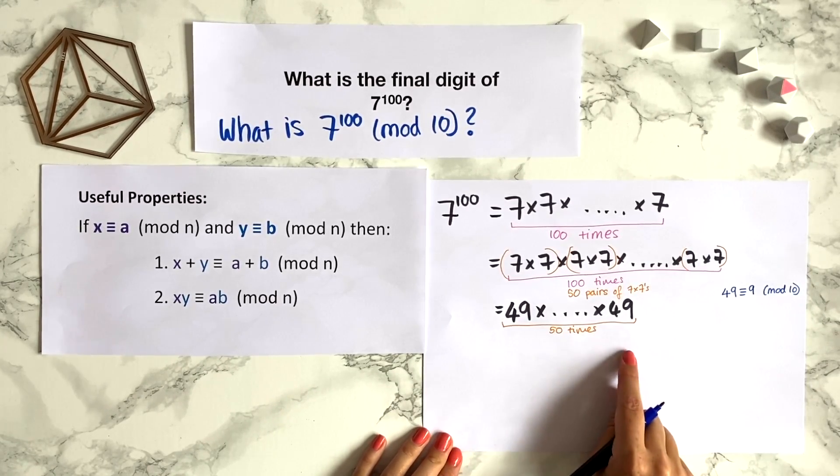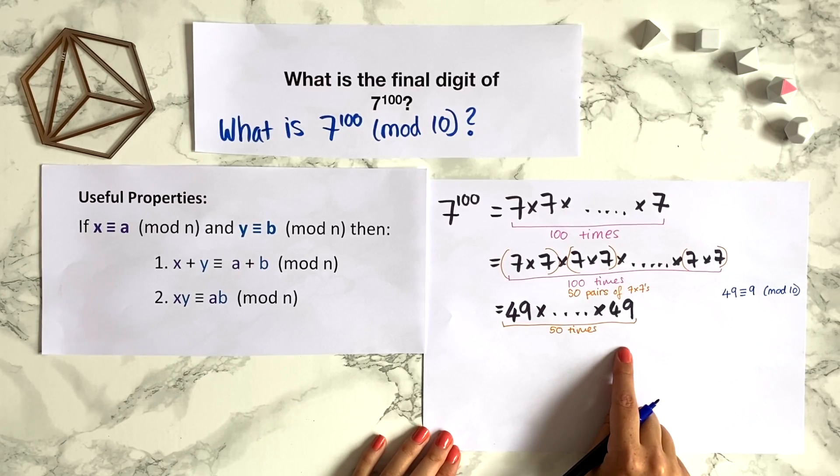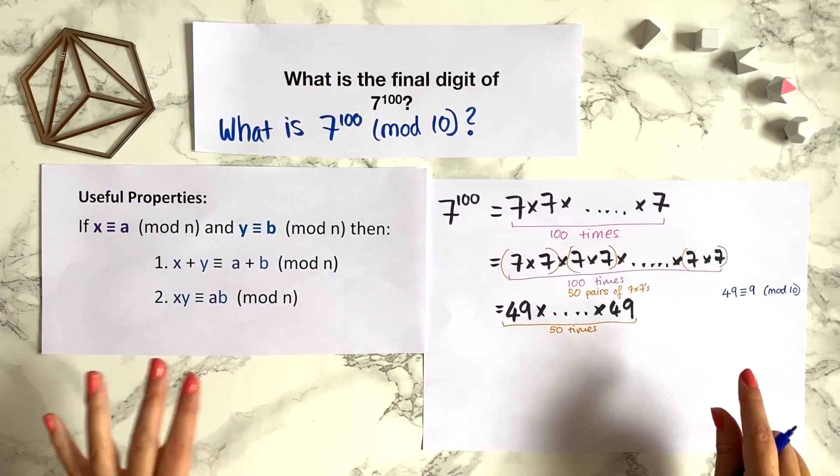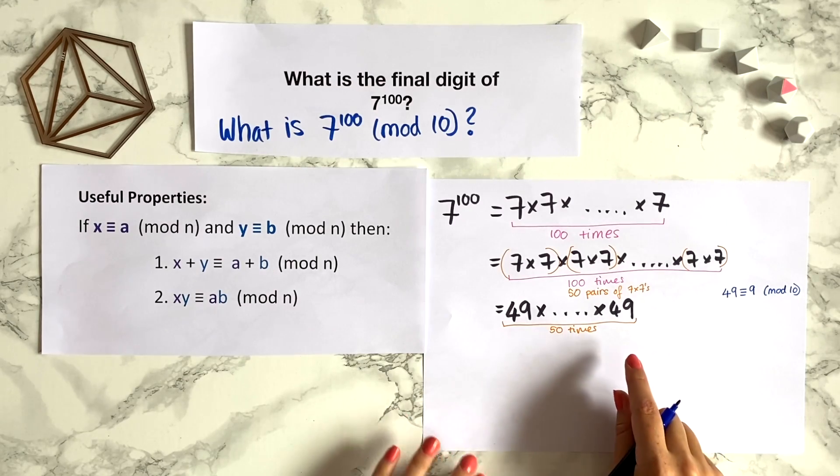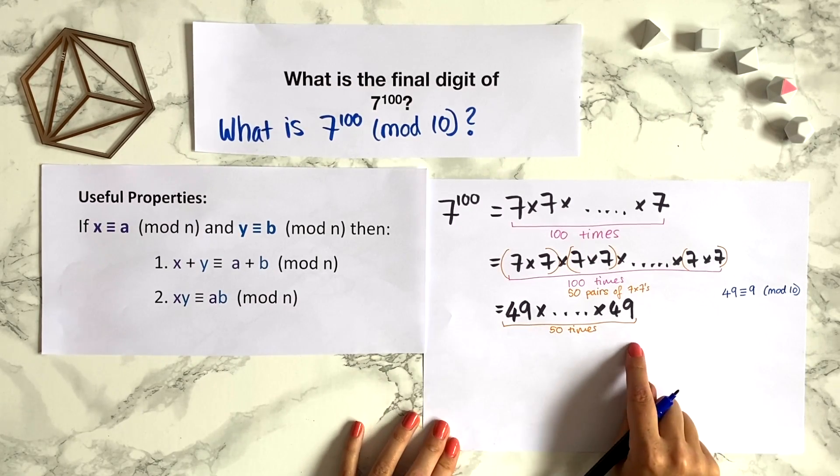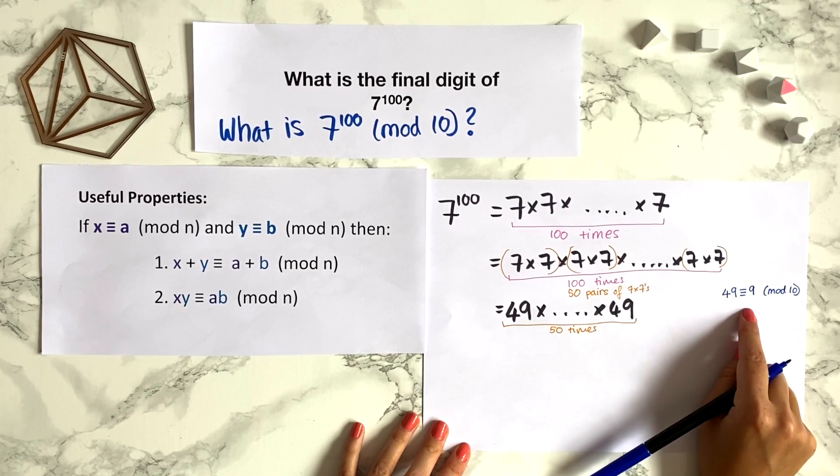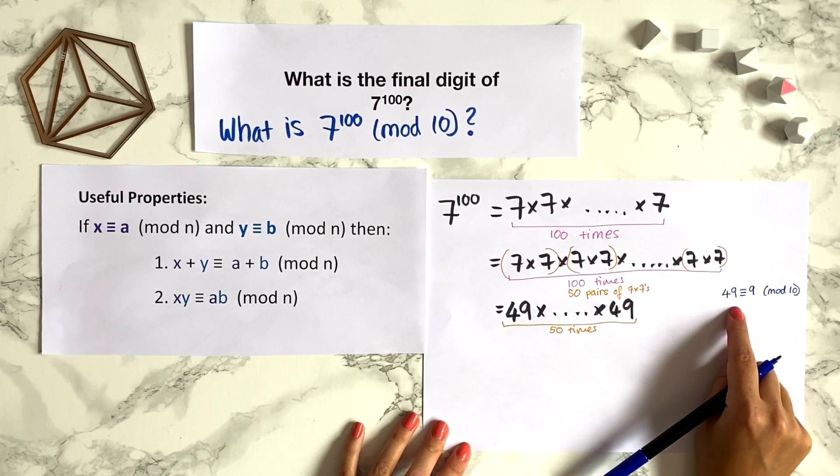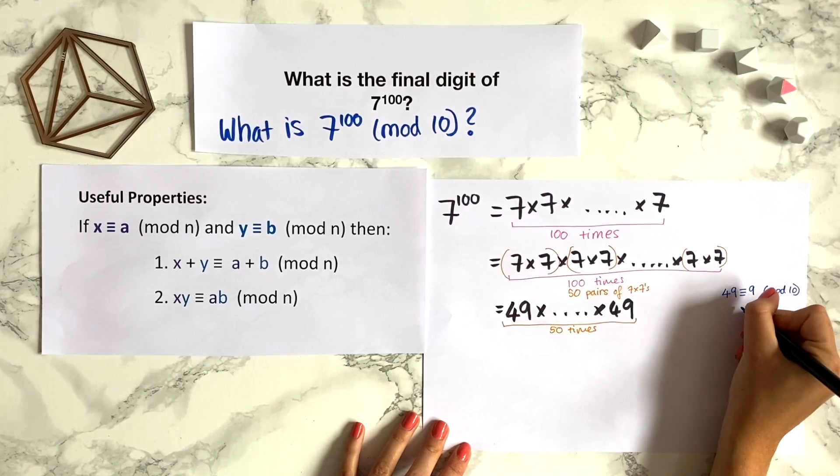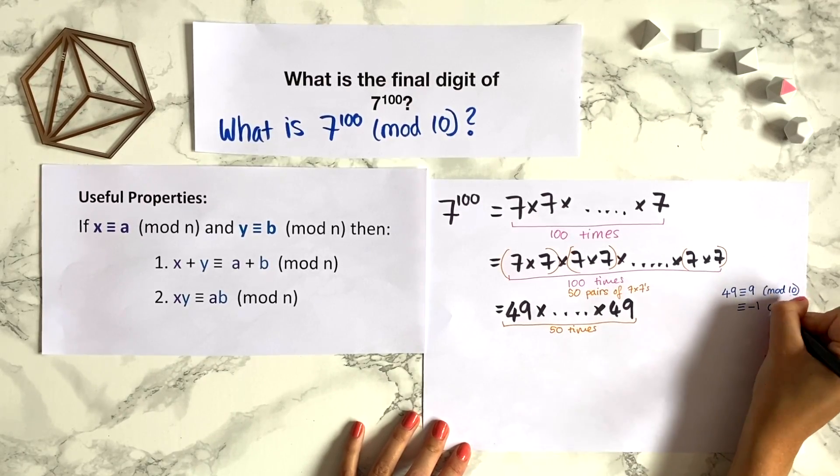But that's still quite a hard product to work out. We don't really want to calculate 9 times 9 times 9 and then work out what that is modulo 10 because that's quite hard to compute. But actually is 49 congruent to anything else that's helpful? Well 49 is also congruent to minus 1 modulo 10.